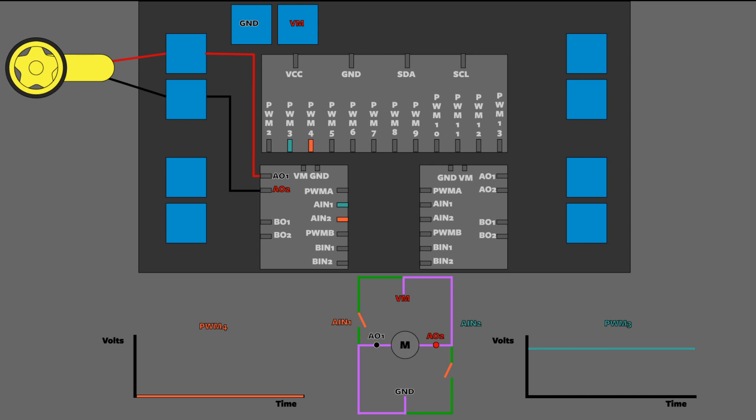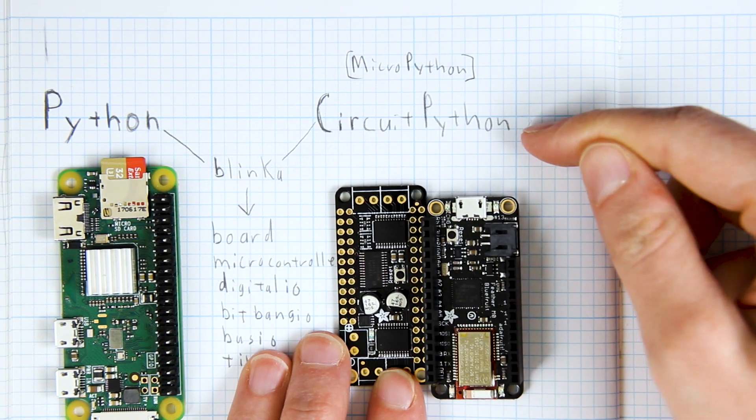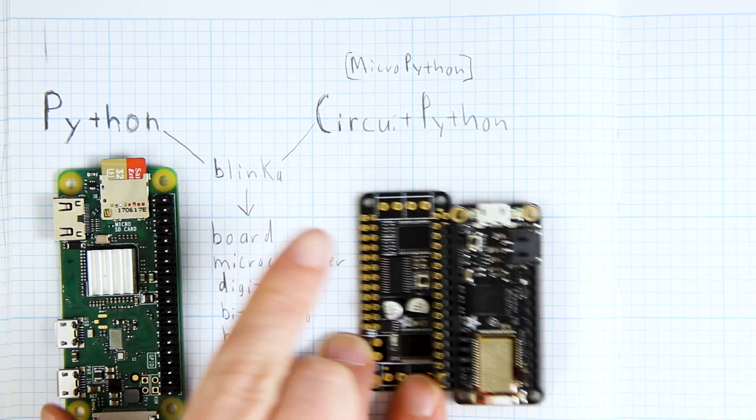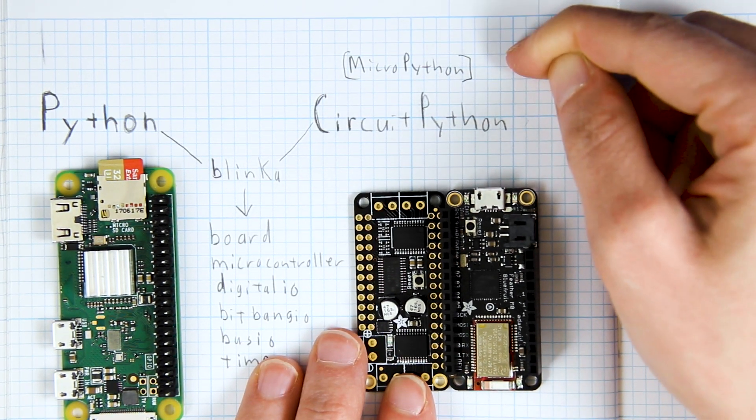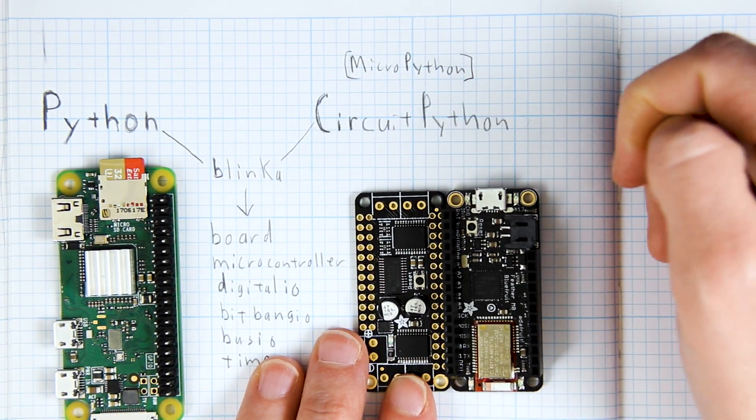Now that we know how the chips on our board work we can move on to coding. The libraries for this chip are written in CircuitPython and we're writing our code in Python. So what are the differences between the two? Well CircuitPython is a special flavor of MicroPython written by Adafruit.